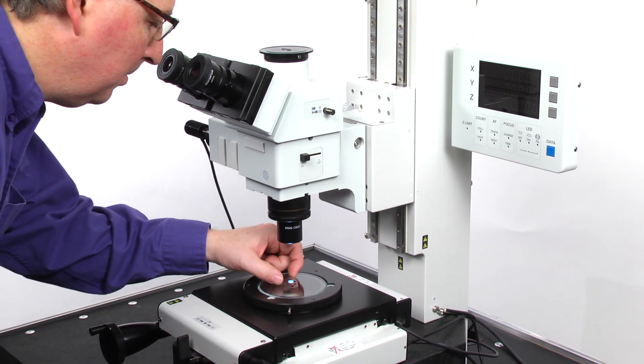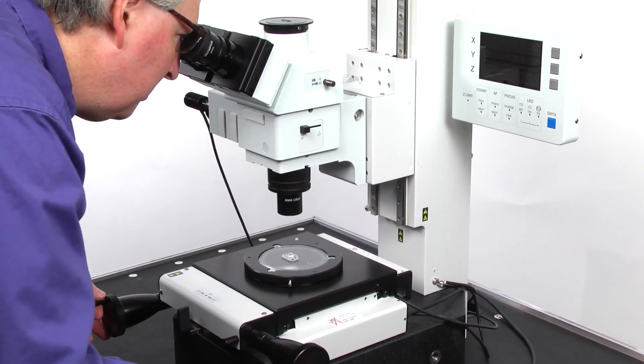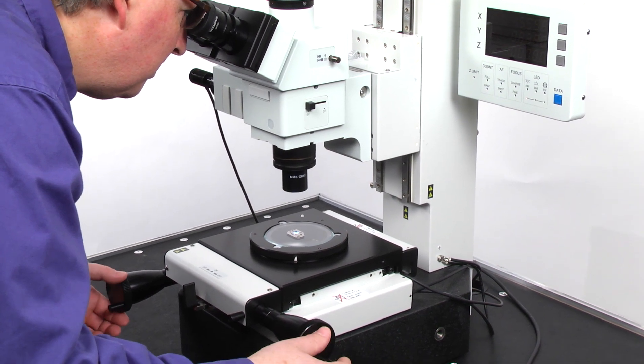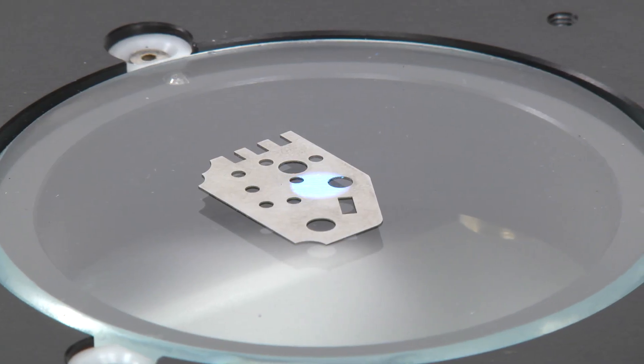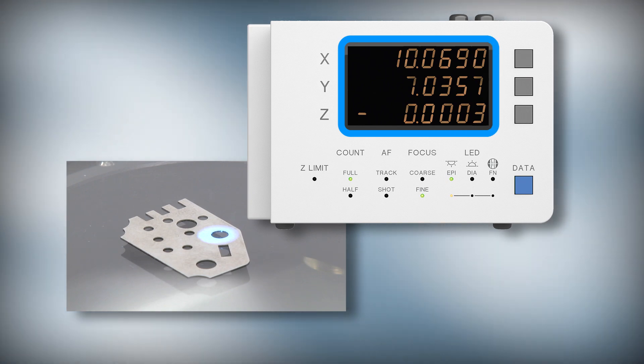In a toolmaker's configuration, operators simply place their sample on the STM-7 stage and locate the feature they wish to measure. Moving across the feature to an endpoint, the display shows the distance measured in all three axes.